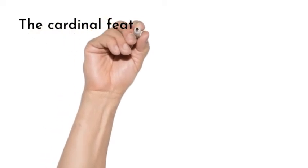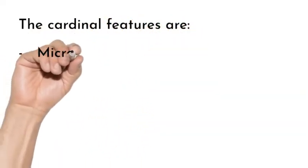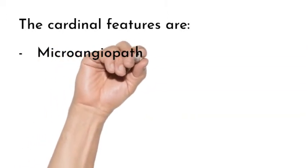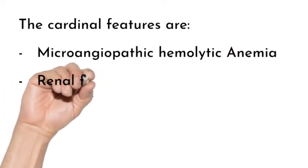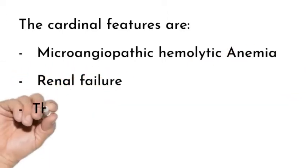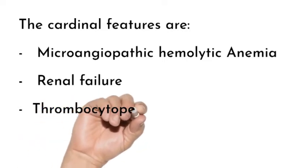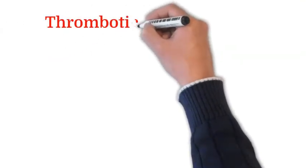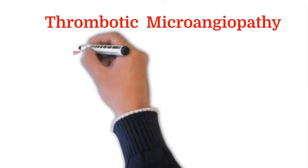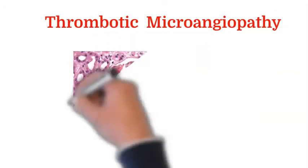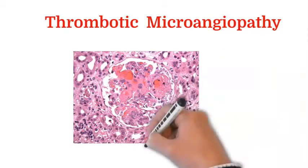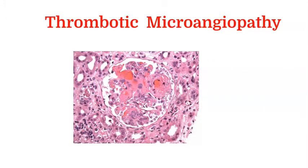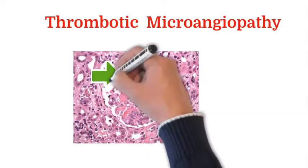The cardinal events in Hemolytic Uremic Syndrome are microangiopathic hemolytic anemia, demonstrated by schistocytes; renal failure, which is one of the very common causes of renal failure in children; and thrombocytopenia of varying degrees. This illustration shows thrombotic microangiopathy — inside a glomerulus, a large number of fibrin thrombi are seen, with an arrow demonstrating a thrombotic fibrin thrombus.